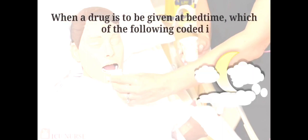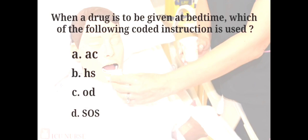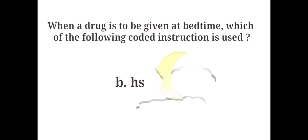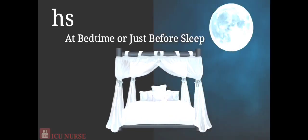When a drug is to be given at bedtime, which coded instruction is used? A. Ac, B. Hs, C. Od, D. Sos. The answer is B. Hs. When a drug is to be given at bedtime, Hs is the coded instruction used. Hs means at bedtime or just before sleep.